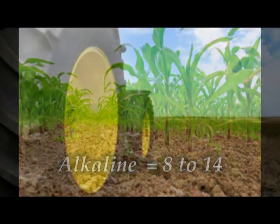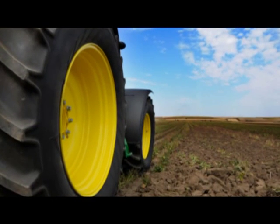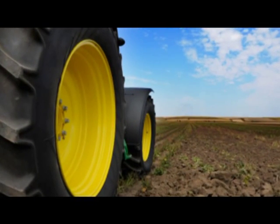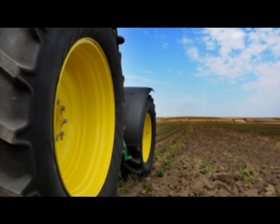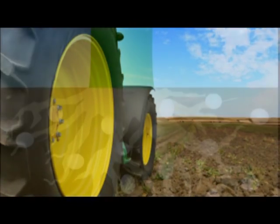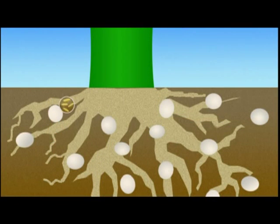Soils that are closer to pH neutral are best for growing crops. In Indiana, soils naturally trend towards acidity. Applying Ag Lime reduces the acidity of the soil.